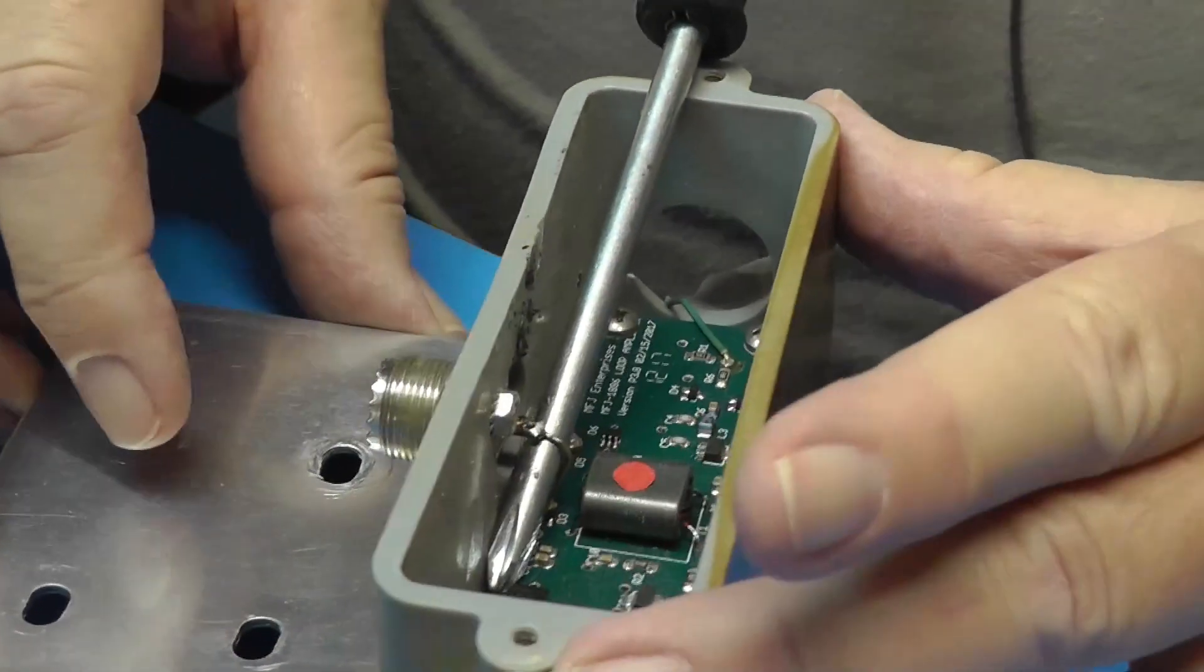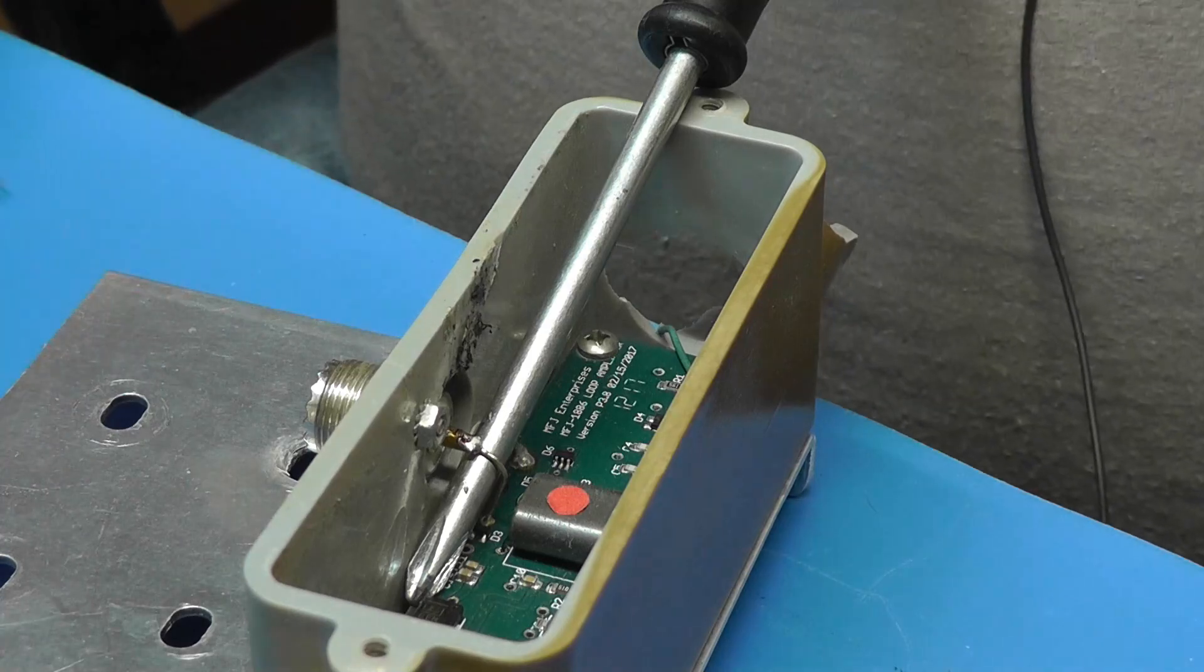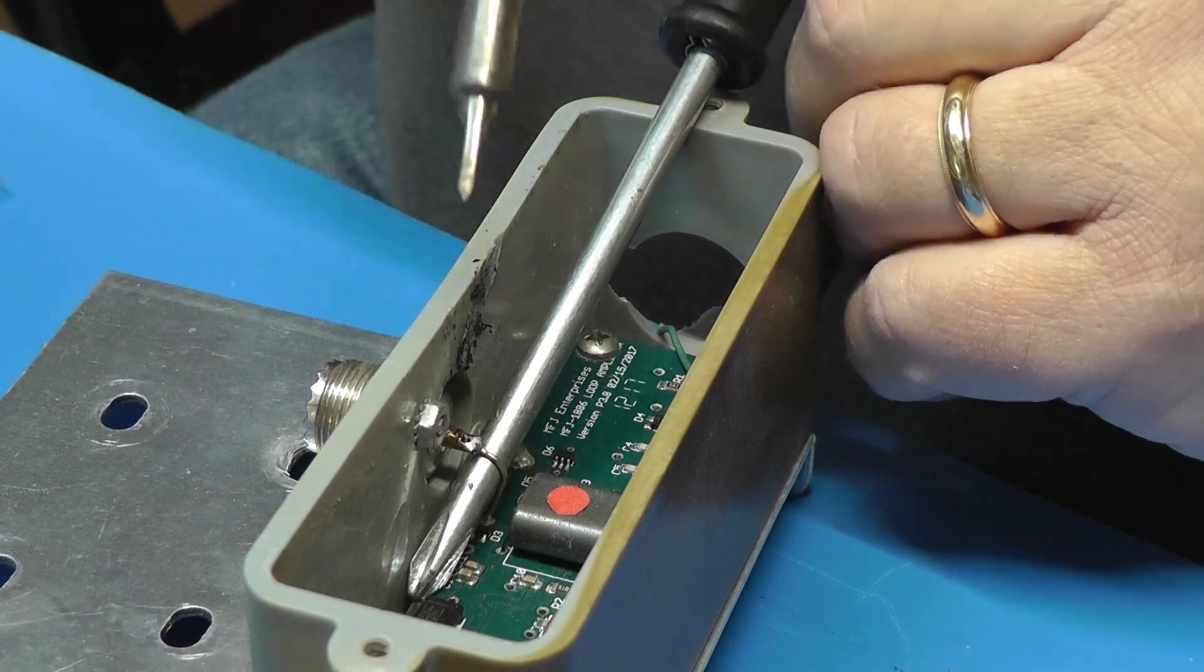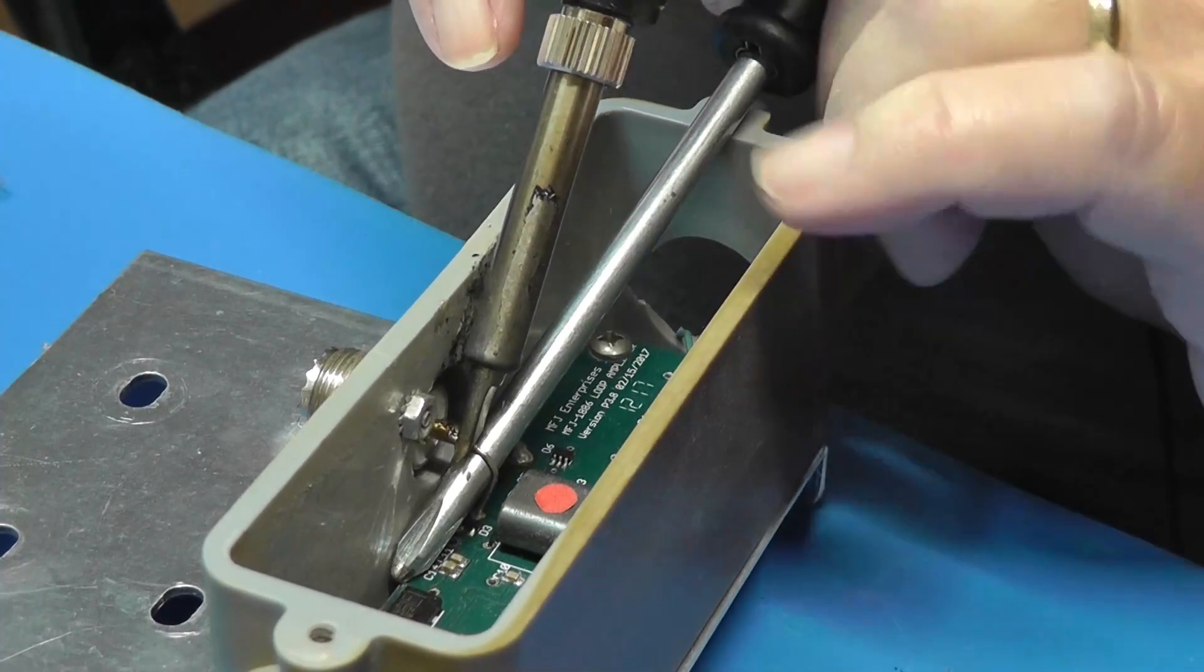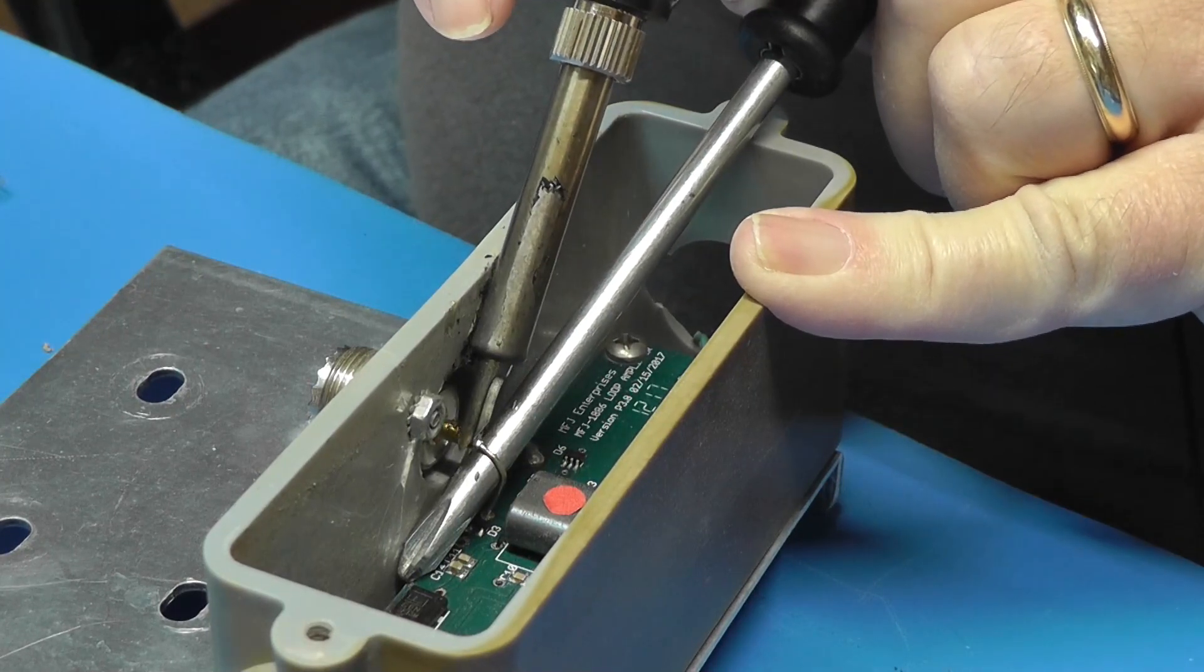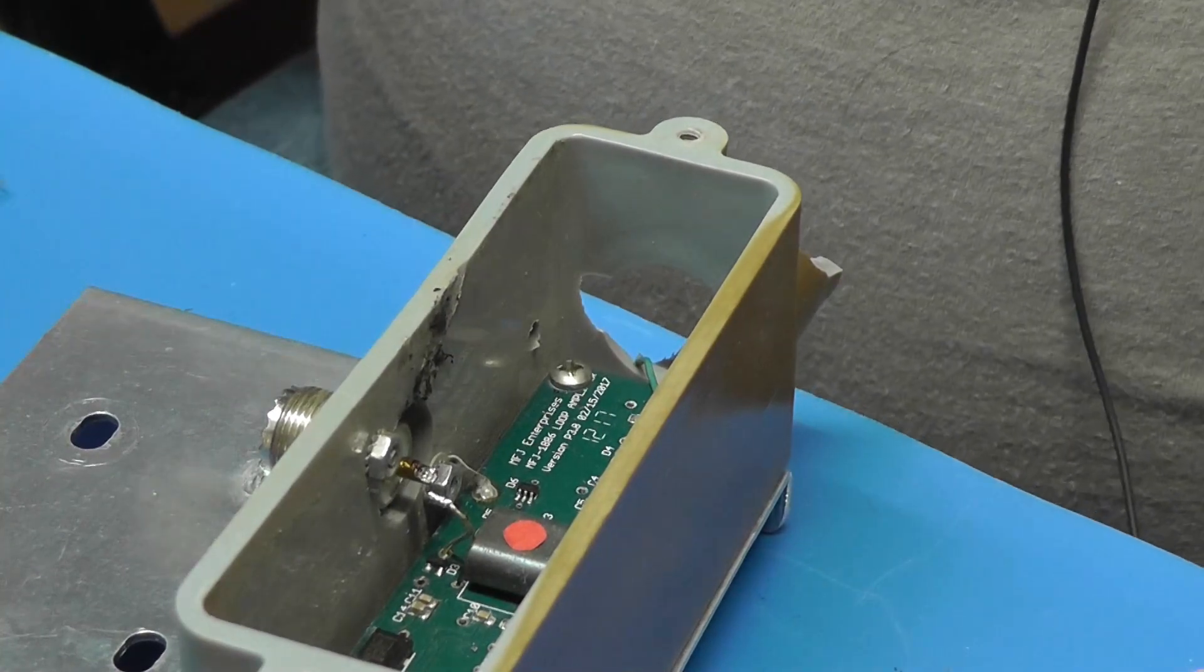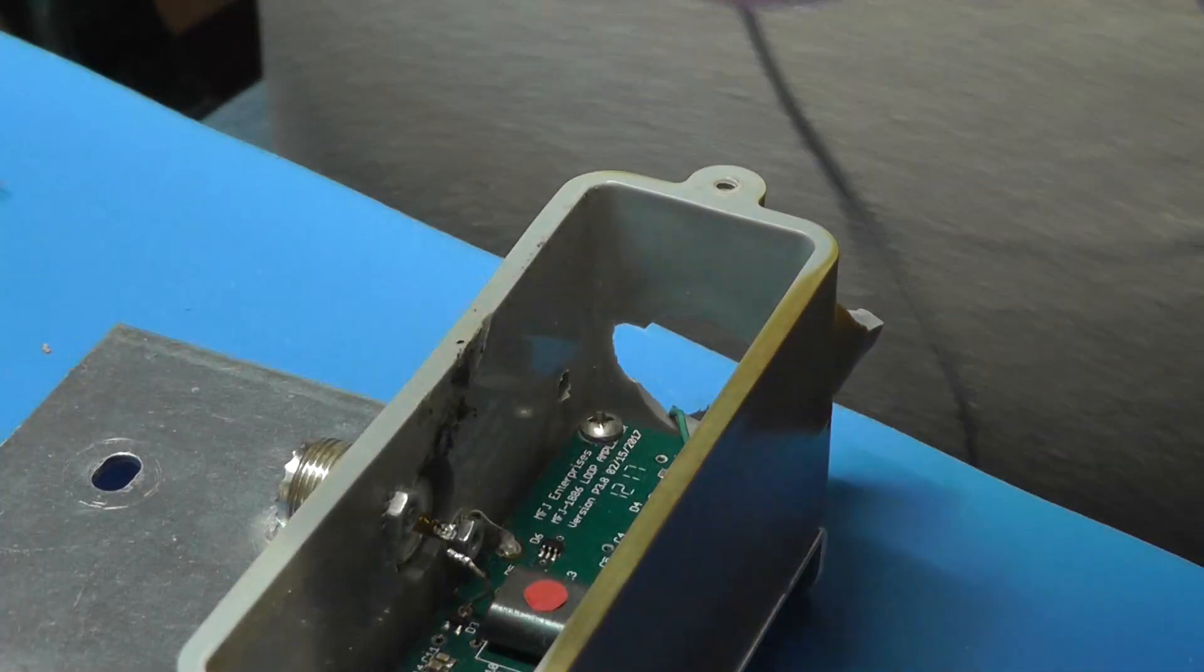Okay here we are. We are trying to get this thing unsoldered here and we've been having a lot of trouble. Let's just try it now. There we go. Okay that is unsoldered. The last step that we do will be to put that back.